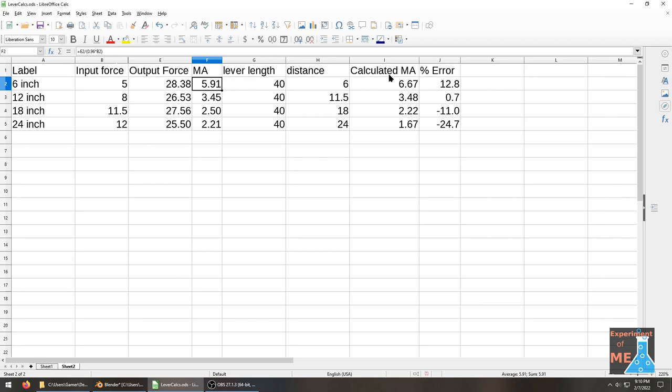Then I have to calculate what the theoretical mechanical advantage should be. So I have the lever length which is 40 inches, then I have the distance away from the i-bolt, and then I have my calculated mechanical advantage, and then how much error I got between calculated and actual in the experiment.